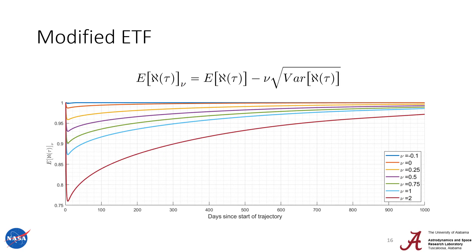We also have something called modified expected thrust fraction, where we take the expectation of olive and subtract off nu times the variance of olive, where nu is a user-defined parameter. By increasing nu, we can make expected thrust fraction more conservative. By making nu negative, we can make expected thrust fraction return down to a traditional trajectory. This is a nice way for a mission designer to tweak how conservative they want their mission design to be, and to trade off robustness to missed thrust events against delivered mass or required flight time.